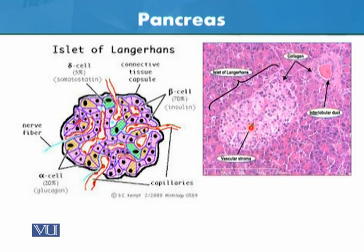Each islet is a small island-like cluster of cells — 'islets' comes from the word for small islands. Langerhans was the person who discovered them. This is the histological or cellular region of the pancreas.